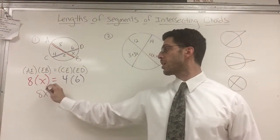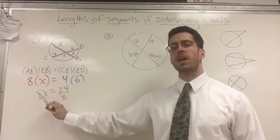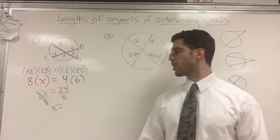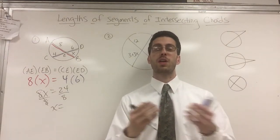Hopefully you're good at this. 8X equals 24. I'm going to divide by 8 on both sides and X equals 3. That's it. Pretty straightforward. Part times part equals part times part.